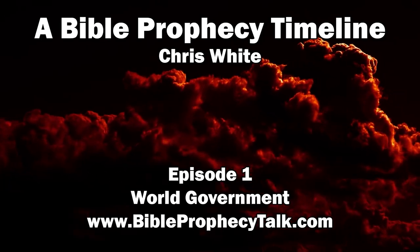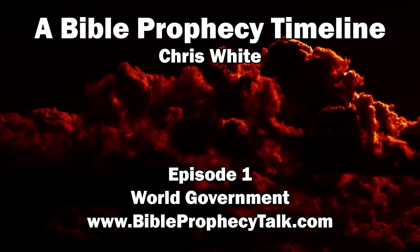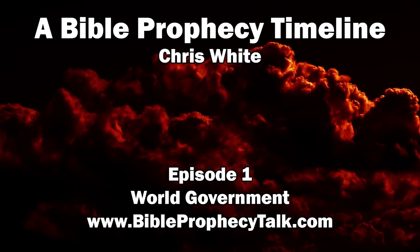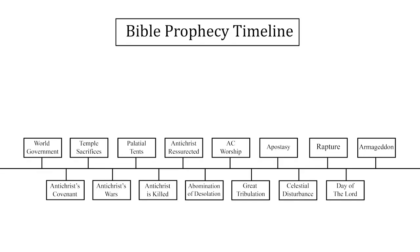Welcome to another multi-week study I am calling a Bible Prophecy Timeline. It's available as a video presentation as well as an audio podcast on the Bible Prophecy Talk podcast feed. You can find links to both at BibleProphecyTalk.com. I've made a graphic with 15 Bible prophecy related events that will occur either just before or during the 70th week of Daniel — the seven-year period in the end times. It is by no means every event that will happen. My intention is to take each section of this timeline and defend with scripture the placement of each event.